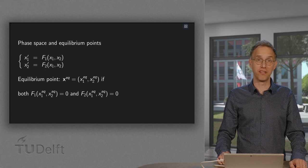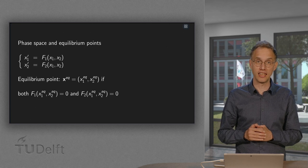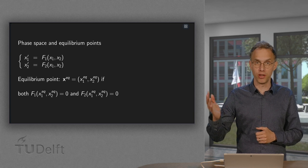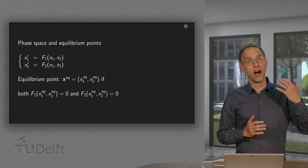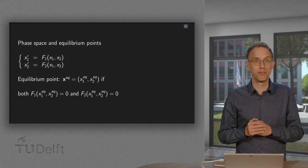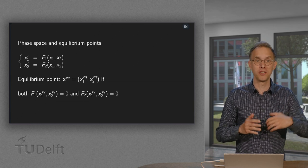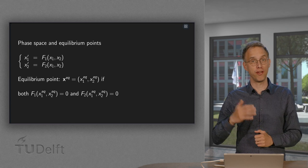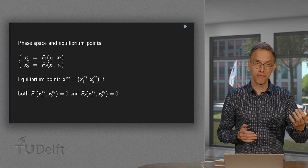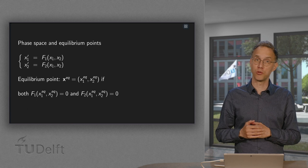We have learned how we can find an explicit solution of x' equals A times x, for the case where A is diagonalizable. We will do the other cases later. However, such an explicit formula does not really provide too much information about how the solution looks. Some kind of graph would be really nice. We can use the so-called phase space. In this video, we will see what this phase space is and how to draw it.